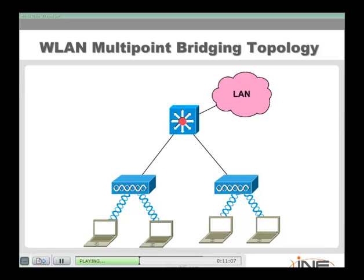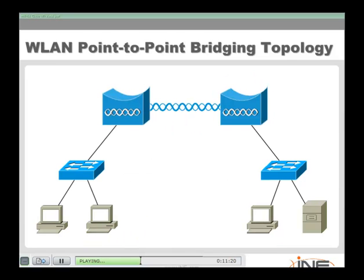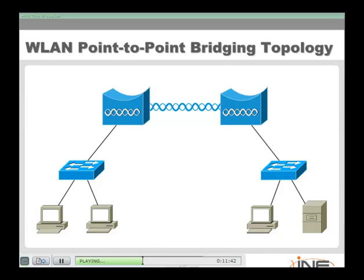Our wireless can bridge the traditional local area network out to wireless clients, or Wi-Fi can bridge in a point-to-point situation — imagine two different buildings with access points acting as bridges connecting two different LANs that have line of sight to each other. Devices can also act in a repeater topology, picking up the RF signal and strengthening it out to additional devices.